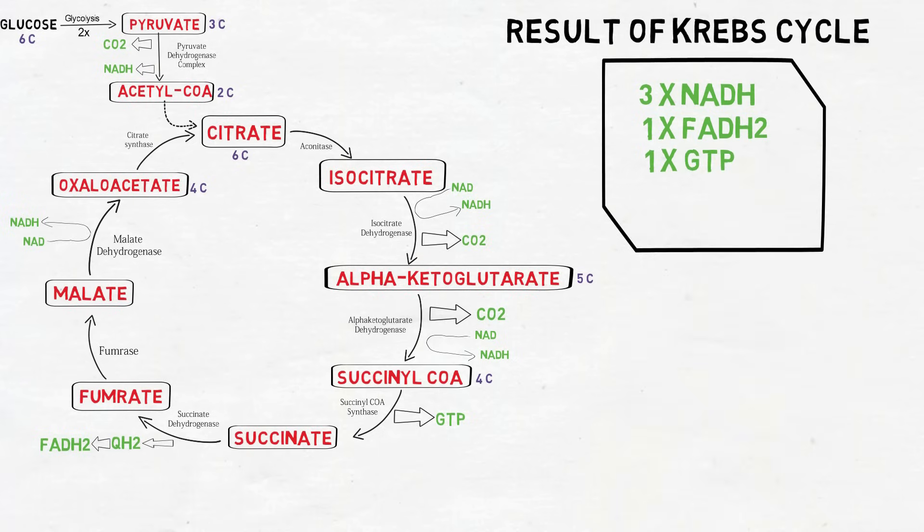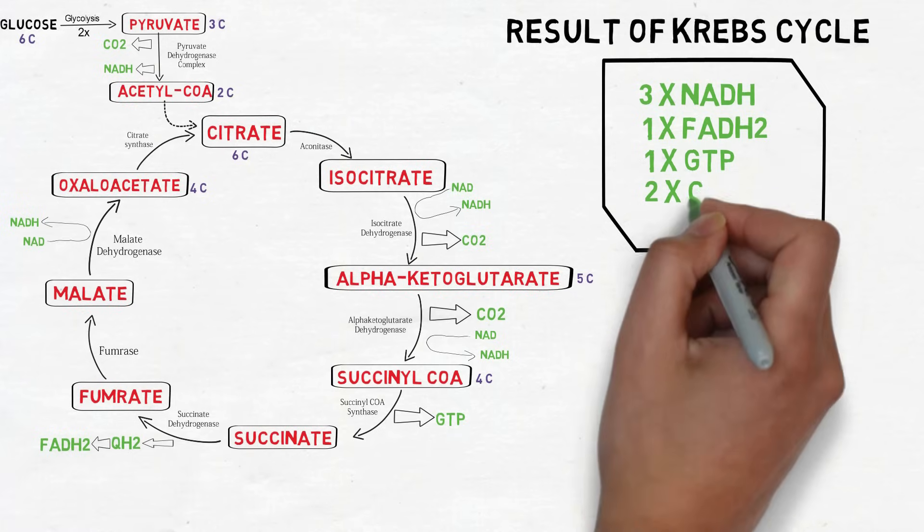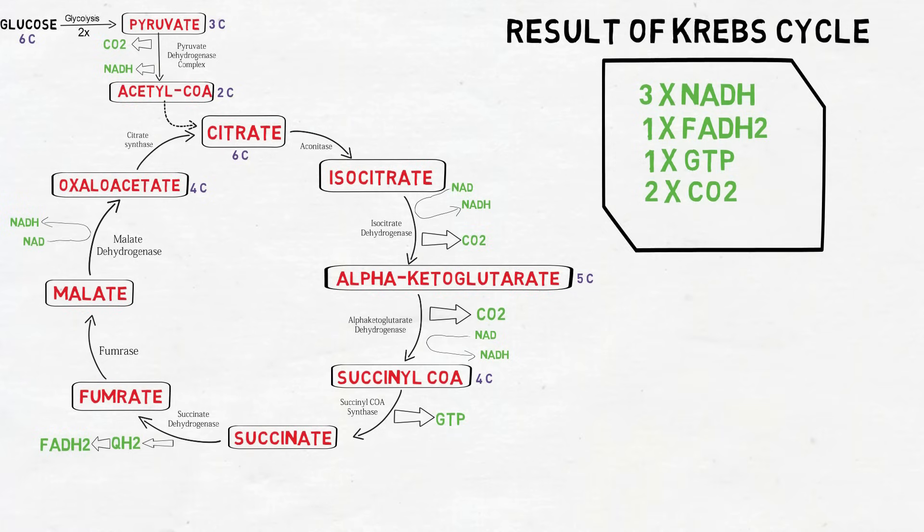one molecule of GTP and two molecules of carbon dioxide. Now since glucose is split into two pyruvate compounds, for each molecule of glucose this cycle runs twice.